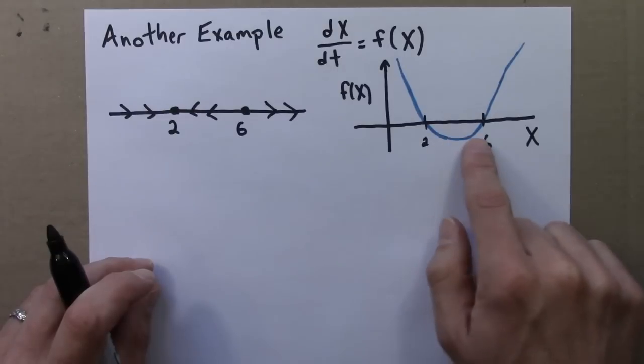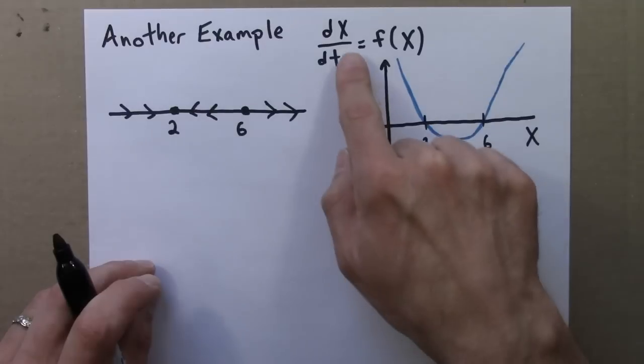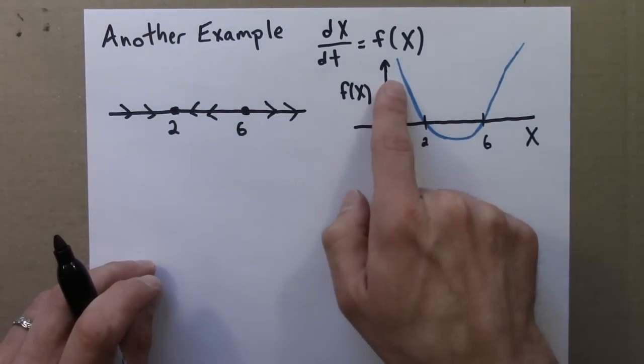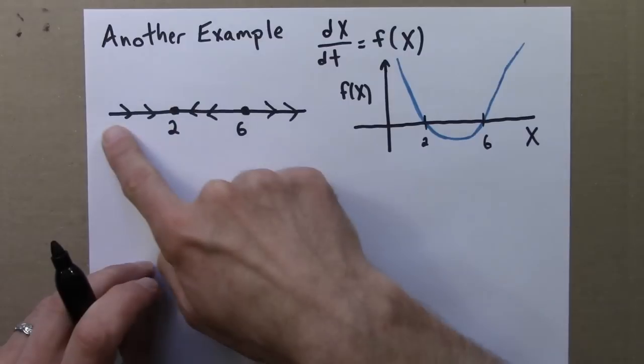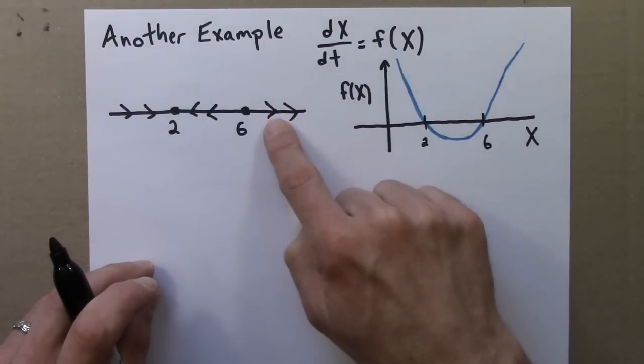Between 2 and 6, the derivative is negative. The blue curve is below the axis, so x is decreasing towards 2. Below 2, the derivative is positive, so we're increasing. Above 6, it's positive again, so it's increasing.